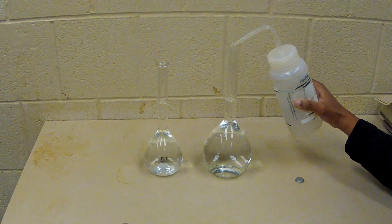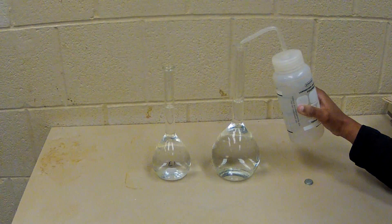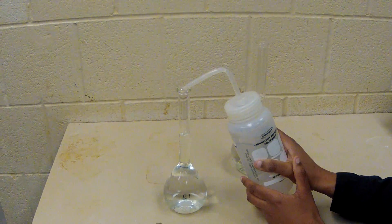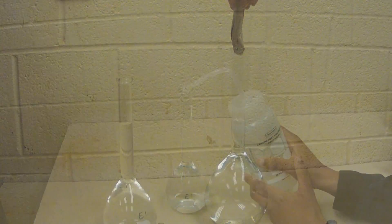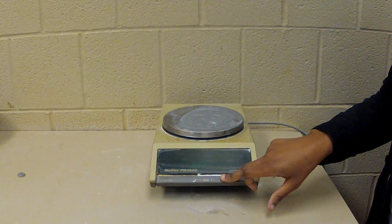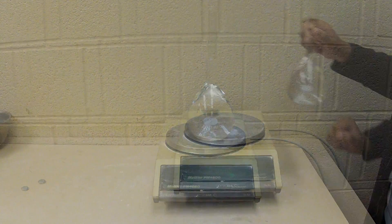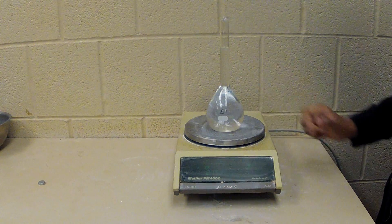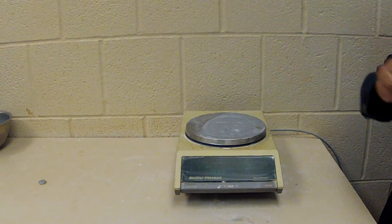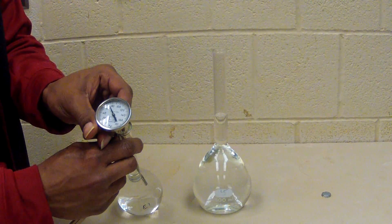Fill each pycnometer to the calibration mark with de-aired water using the bottom of the meniscus. Dry any water beads on the inside of the stem, above the calibration mark, or on the exterior of the pycnometer using a paper towel. Measure and record the mass of each pycnometer with water. Measure and record the temperature of the calibration water for each pycnometer.